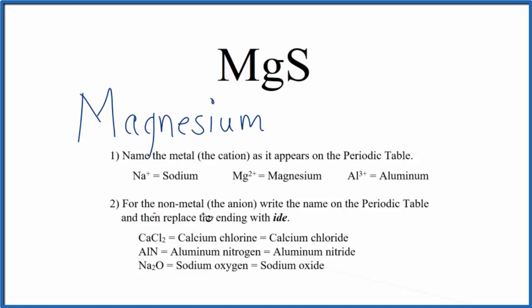Next, we write the name for the non-metal, the S, the sulfur, just as it's written on the periodic table, although we start out with a small s. Then we replace the ending with IDE.